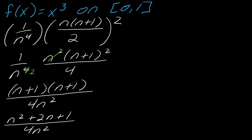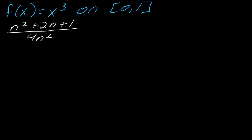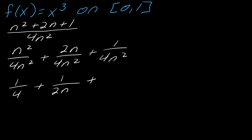Once again, I need more space. And now what I want to do is I want to break this up into pieces. So I've got this piece. I've got 2n over 4n squared. And then I've got 1 over 4n squared. And now I can simplify. So this will be 1 fourth plus 1 over 2n plus 1 over 4n squared. So ta-da! There is my formula for just any amount of general n subintervals.